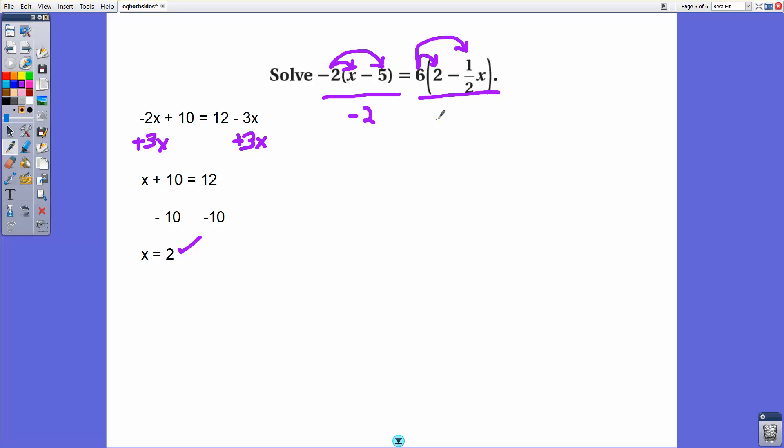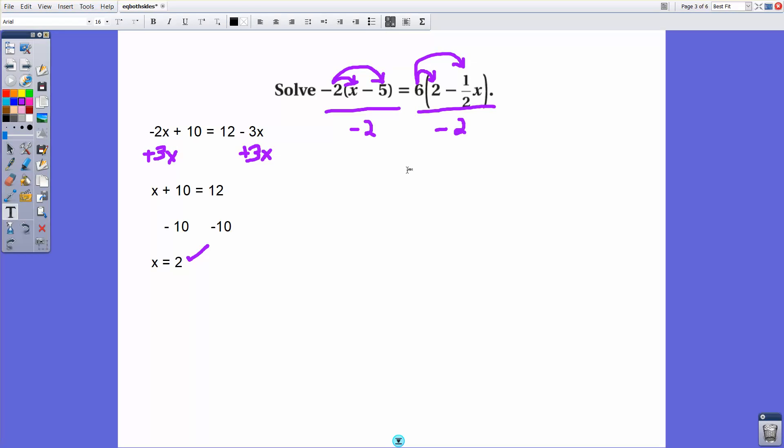And by doing an entire equation by negative 2, or a multiplication problem by negative 2, that would cancel out the coefficient here. So a strategy that you could employ is to remove the coefficients first, and then you would have x minus 5 equals negative 3 times 2 minus 1 half x. But the problem here is if you do that, you'll still have a distribution to do.